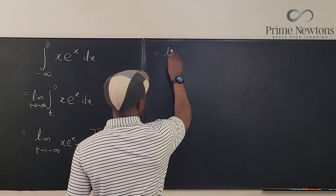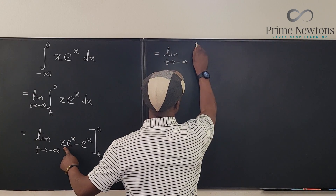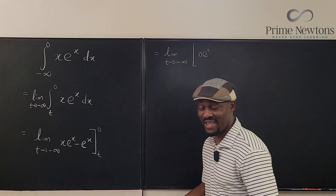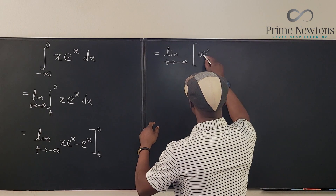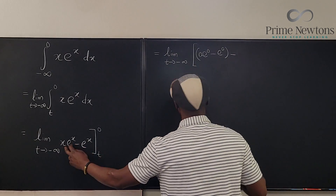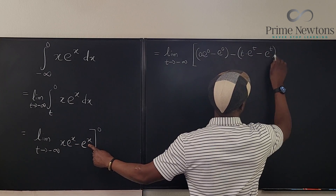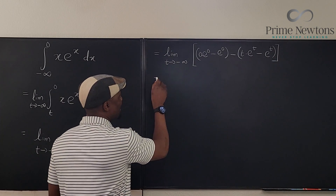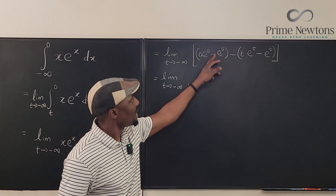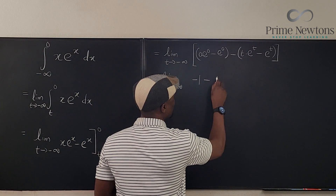This is equal to the limit as t goes to negative infinity of: plugging in 0 gives 0·e⁰ minus e⁰, minus plugging in t gives t·eᵗ minus eᵗ. Simplifying: 0·1 is 0, e⁰ is 1, so we get minus 1 minus t·eᵗ plus eᵗ.